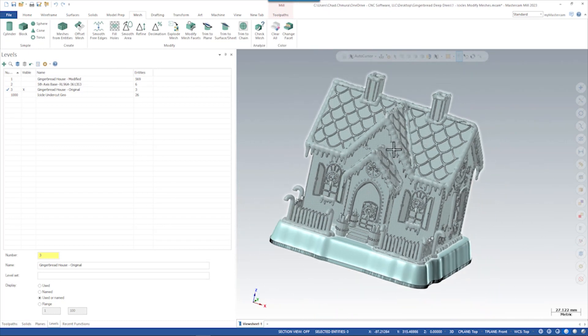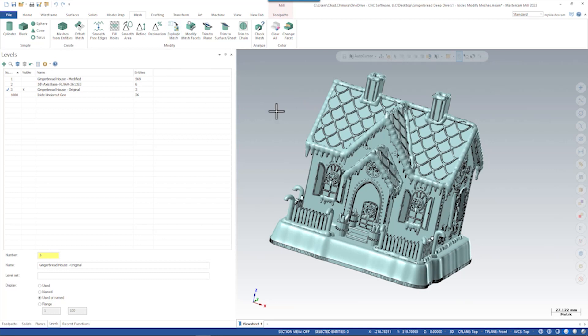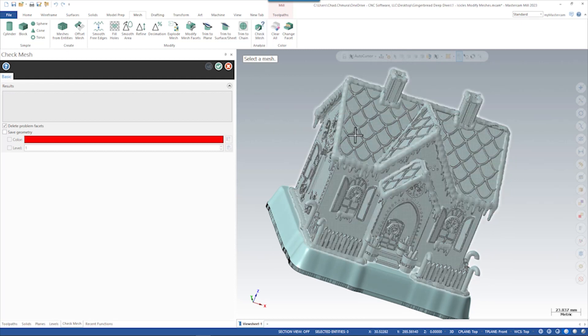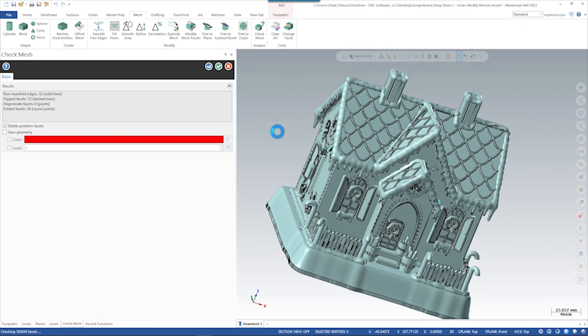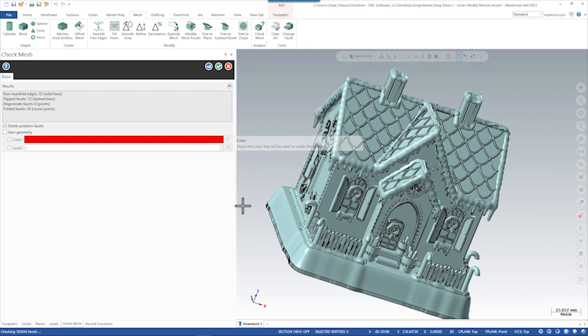Mastercam allows us to do that using the explode mesh utility, but first before we can explode this mesh into multiple parts, we have to run check mesh to make sure it's clean. Check mesh finds that there are some flipped facets, some non-manifold edges, and a series of other problems with this mesh that need to be addressed.